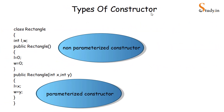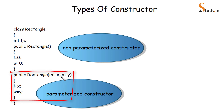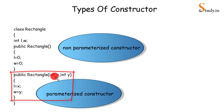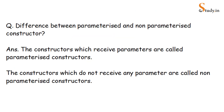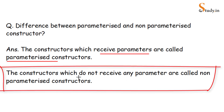Now, there are two types of constructors: parameterized and non-parameterized. A non-parameterized constructor does not receive any parameters. A parameterized constructor has parameters — for example, two int parameters x and y — and we set l equal to x and w equal to y. The constructor which receives parameters is called a parameterized constructor, whereas the constructor which does not receive any parameters is called a non-parameterized constructor.